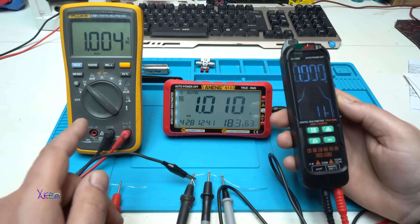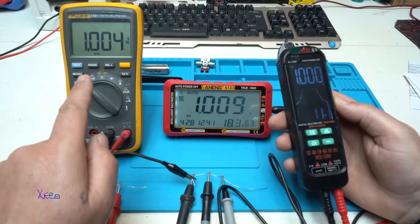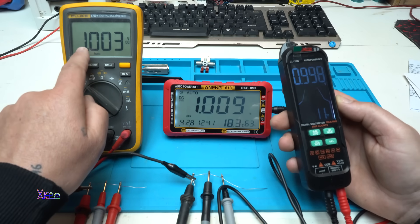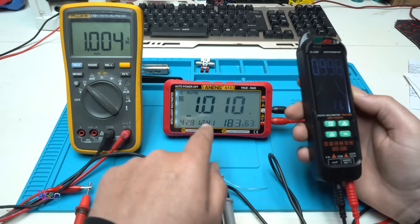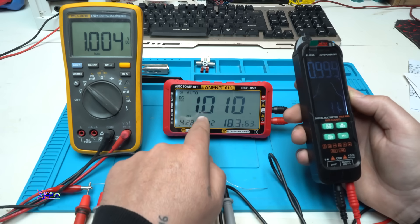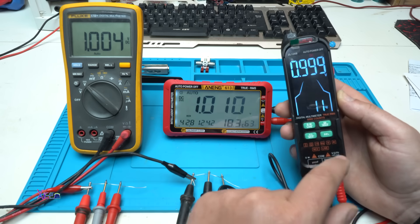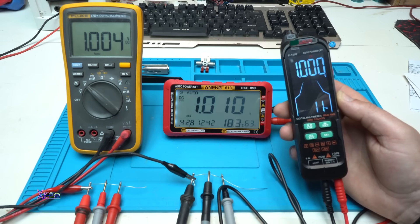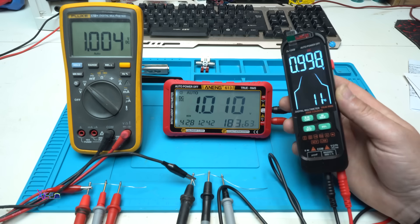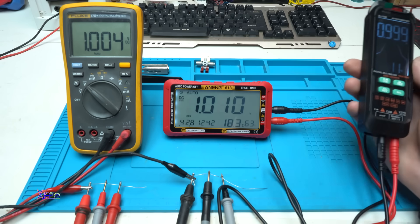I set the power supply to 1 volt. Fluke 1.004. The Anang 1.01. This one 0.999 volt, 1 volt. This is the most accurate right now.